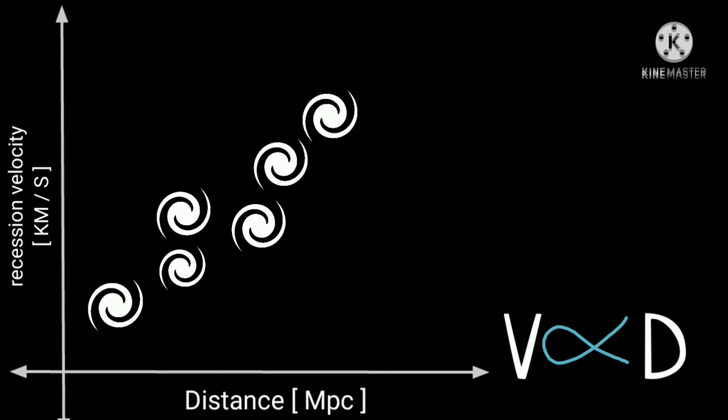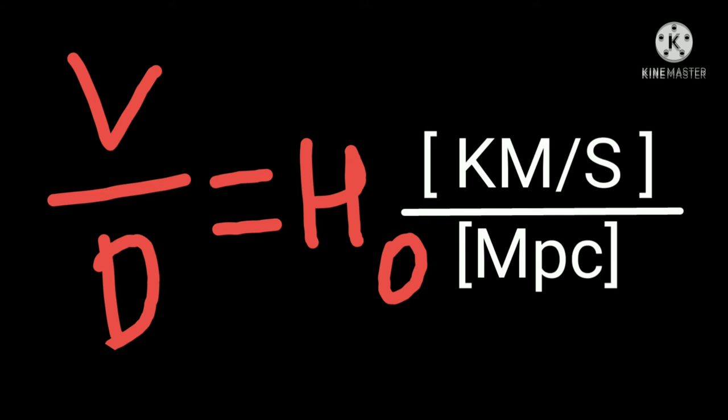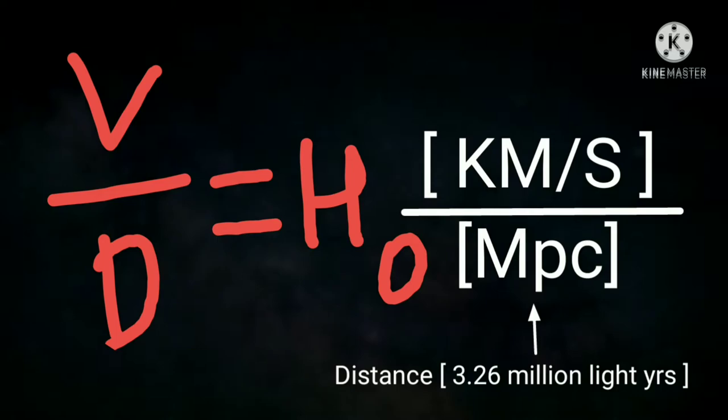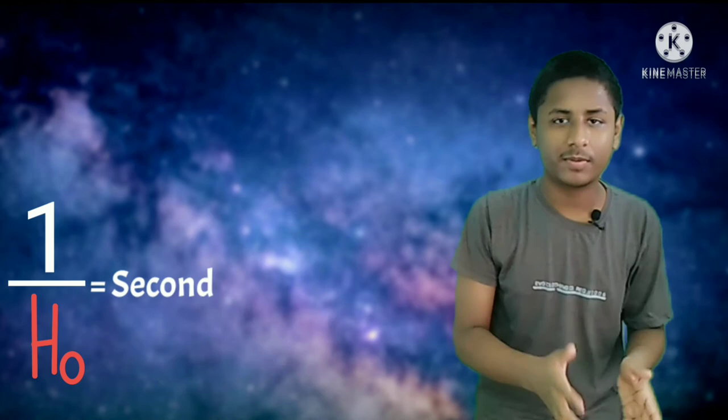If you pay attention to the unit of the Hubble constant, you will find that it has units of kilometers per second per megaparsec. A megaparsec is a measure of distance, approximately equal to 3.26 million light years. If you manipulate this in the right way, you will find that it has units of inverse time. And that time is none other than the time elapsed from the big bang — in other words, the age of the universe — at least approximately, because it assumes the Hubble constant has not changed at all.